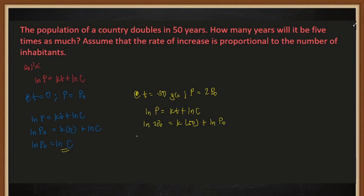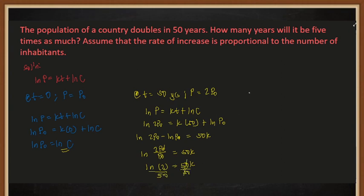Our ln(C) is equal to ln(P₀). Transposing, we have ln(2P₀) minus ln(P₀) equals 50K. Using the properties of logarithm, this becomes ln(2P₀/P₀) equals 50K. Cancelling P₀, we get ln(2) equals 50K. Dividing both sides by 50, K equals ln(2) over 50.